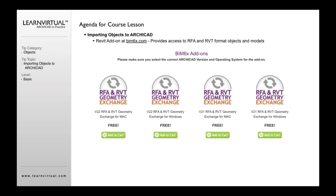If you have not used RFA or RVT geometry, this is where you go for it. BIM6X is a company here in the States that Graphisoft worked with to make this RFA and RVT geometry available to companies — you can download it for free. Graphisoft actually developed this, and it is essentially sourced through BIM6X.